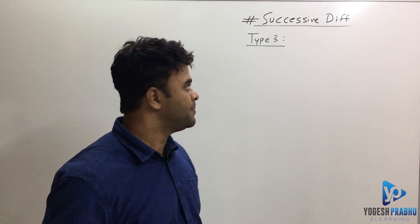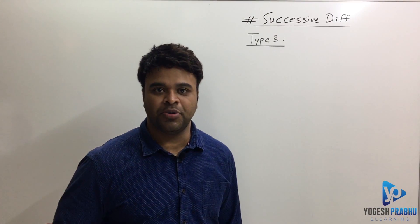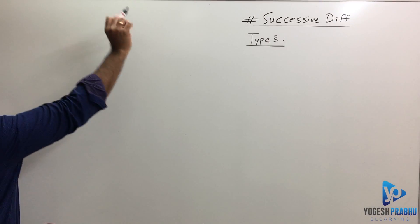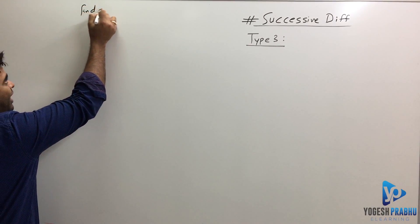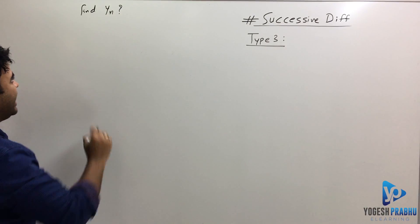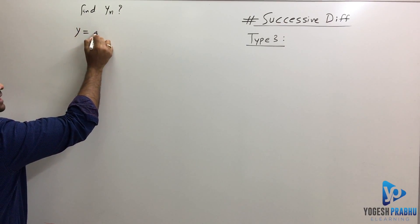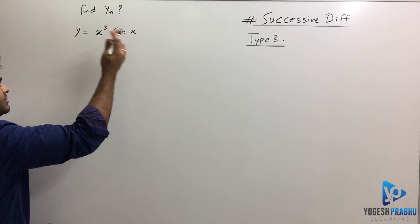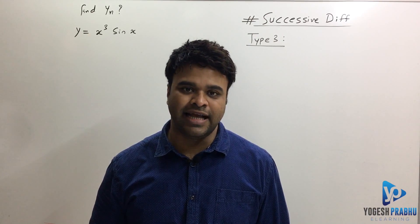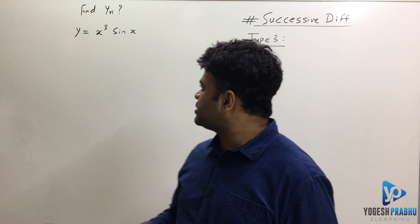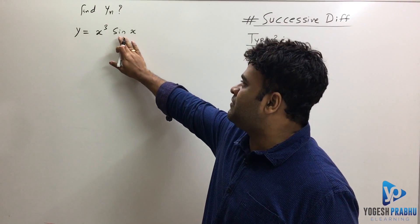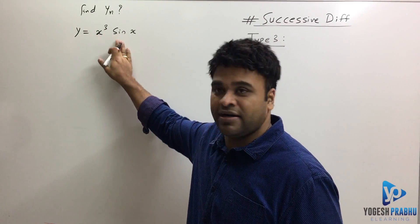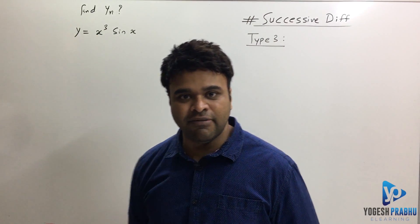Let's look at the next type. Suppose I ask you to find y_n, the nth differentiation, and I give you y = x³·sin(x). This is not in any standard form. We have a differentiation of sin(x) which we can deal with, and we can deal with x³, but now it's a product.